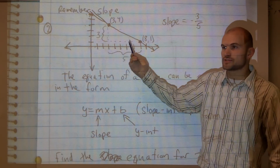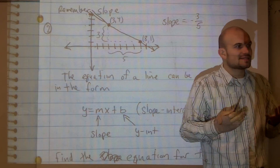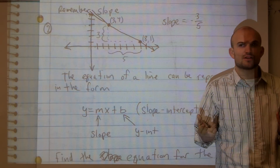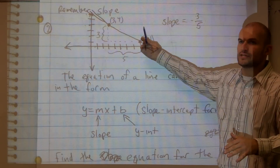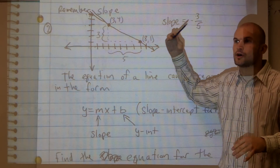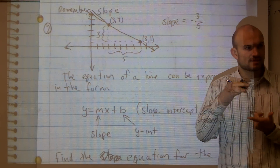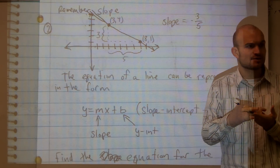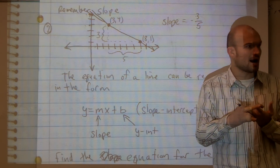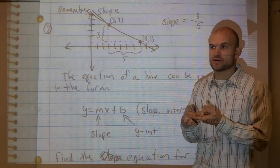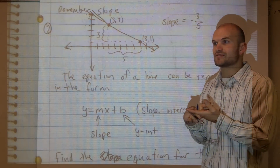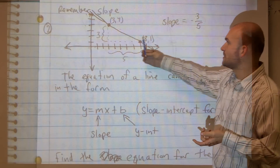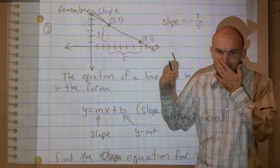So does everybody see how I found the slope? Remember, guys, slope is a ratio. A lot of people, once we start talking about intercepts, they are confusing your intercepts and your slope. Slope is a ratio between the rise, or the change in your y's, compared to the change in your x values, which we call the run. So the slope is negative 3 fifths.